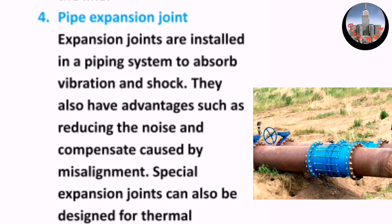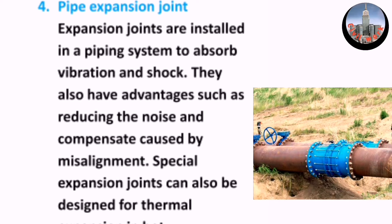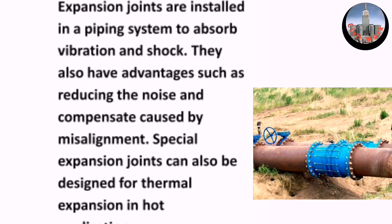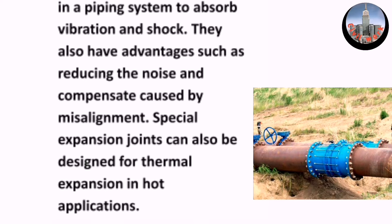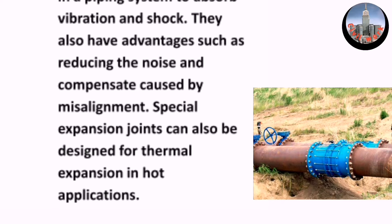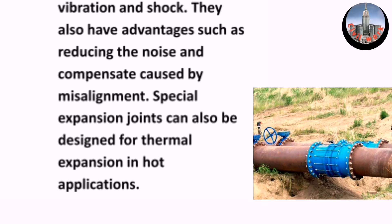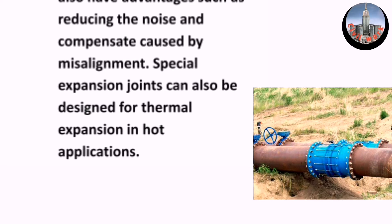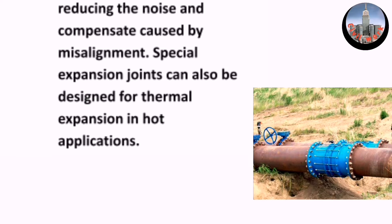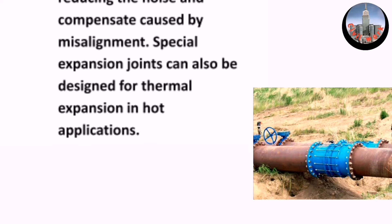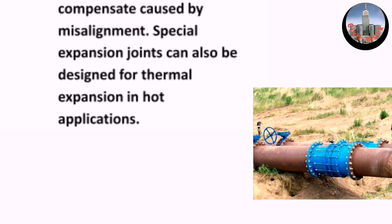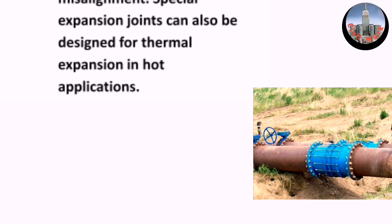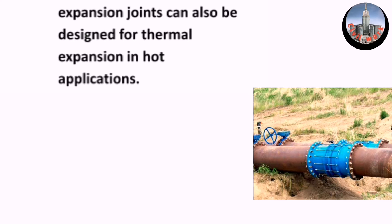Four, pipe expansion joints — expansion joints are installed in a piping system to absorb vibration and shock. They also have advantages such as reducing noise and compensating for misalignment. Special expansion joints can also be designed for thermal expansion in hot applications.